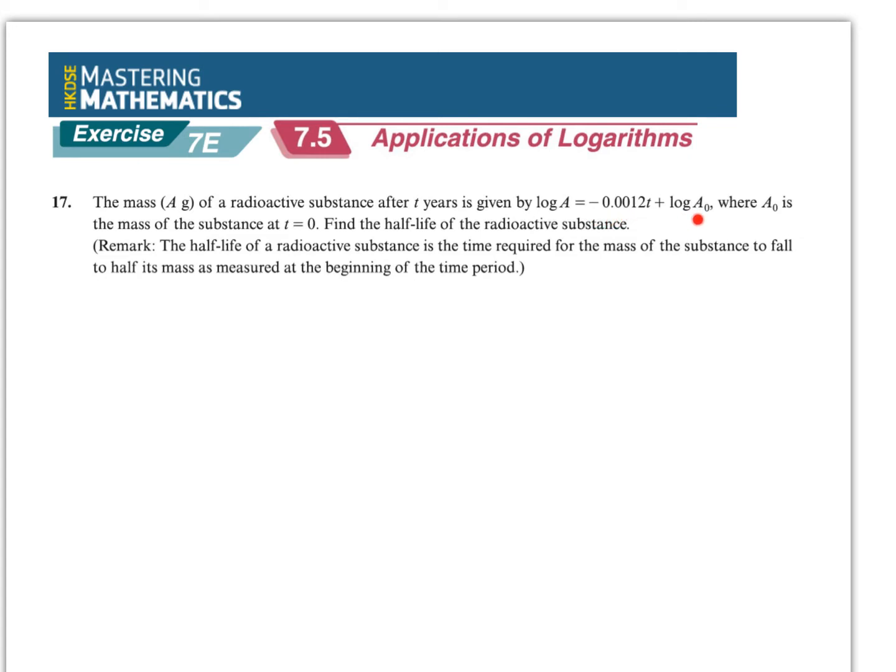log a0 where a0 is the mass of the substance at t equals 0. Find the half-life of the radioactive system. Remark, the half-life of a radioactive system is the time required for the mass of the substance to fall to half its mass as measured at the beginning of the time period.